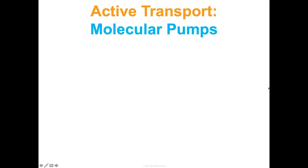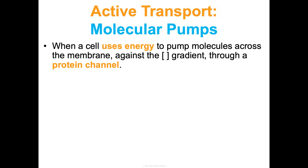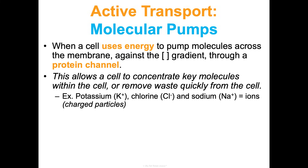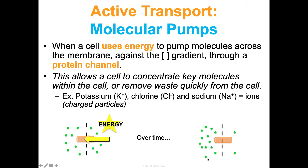The last three types of transport are related to active transport — moving against the gradient from low to high, requiring extra energy. One type is molecular pumps: a cell uses energy to pump molecules across the membrane against the concentration gradient and through a protein channel. The cell does this to concentrate certain molecules within or outside the cell, or to remove waste quickly. Potassium, chlorine, and sodium — ions or charged particles — are all moved through molecular pumps, pumping them from low to high so that over time they're concentrated on one side.